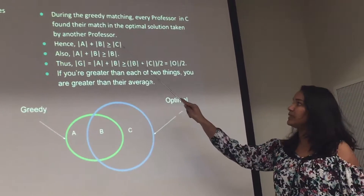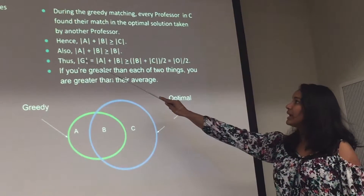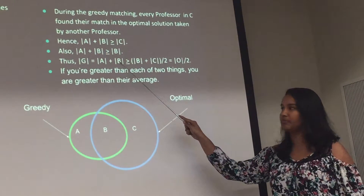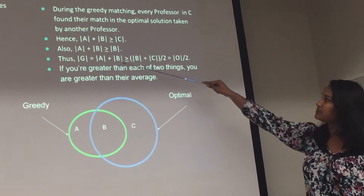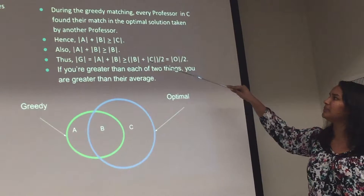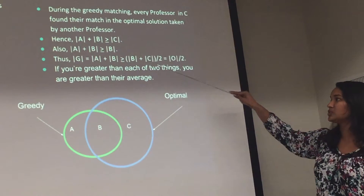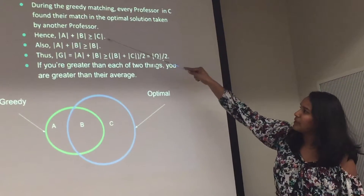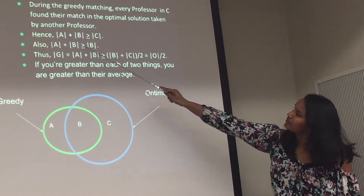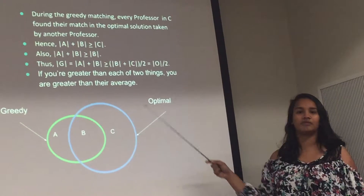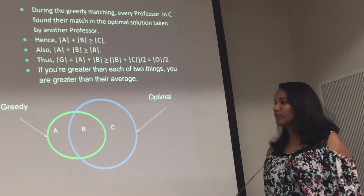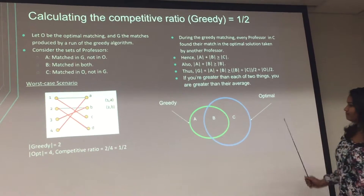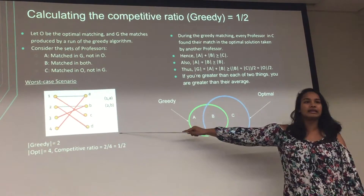We know that A plus B is greater than C, which is obvious, and also that A plus B is always greater than the cardinality of B. Combining these two inequalities, A plus B is greater than (B plus C) divided by 2 — because if a quantity is greater than each of two things, it's obviously greater than their average as well. This gives us the competitive ratio.